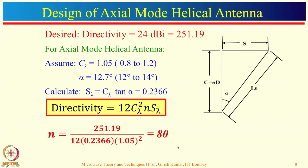Everything is in the normalized fashion. For example, if you want to design an antenna at 1 GHz, lambda will be 30 cm. With C_lambda = 1.05, C equals 1.05 multiplied by 30 cm. From there you can calculate the value of D, and wire diameter is not very important, so you can realize the axial mode helical antenna accordingly.